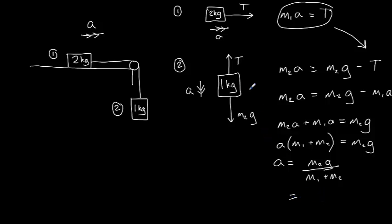So we know that the mass of mass 2 is 1kg. So 1 multiplied by 9.81 divided by the sum of the two masses, 1kg plus 2kg is 3kg. So our final answer becomes 9.81 divided by 3, which is 3.27 meters per second squared.